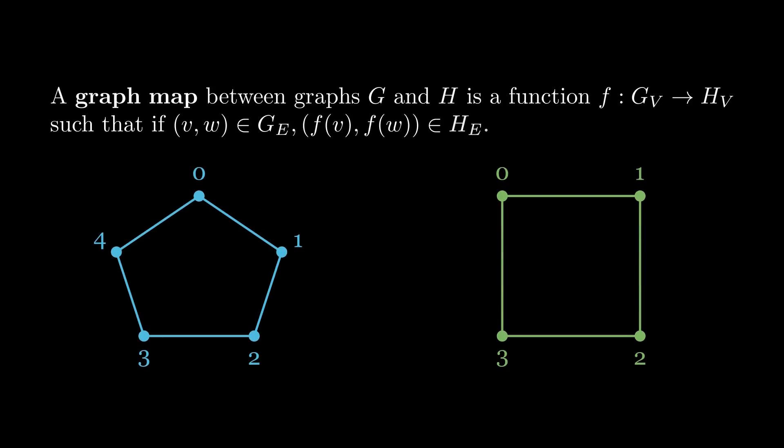So for example, suppose we have the 5 cycle and the 4 cycle here. There's a map from the 5 cycle to the 4 cycle that takes a vertex V and sends it to V mod 4. And that sends every edge to an edge, so it's a valid graph map.